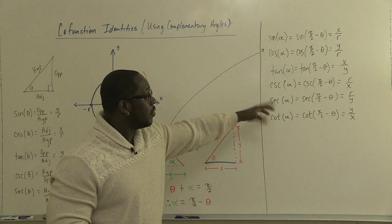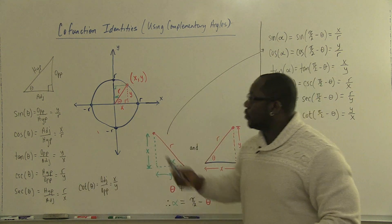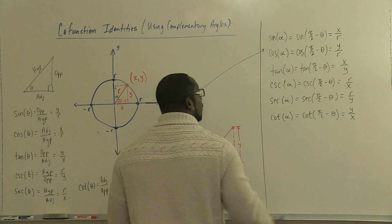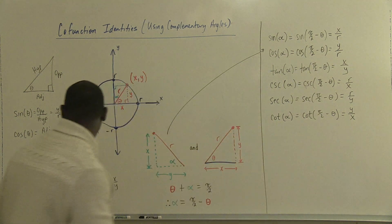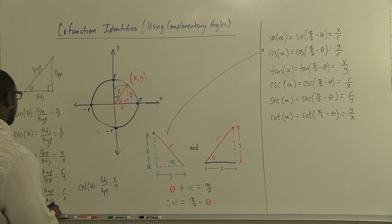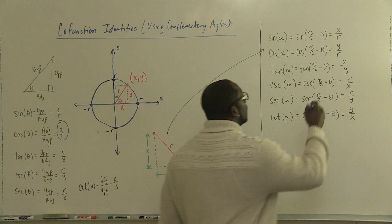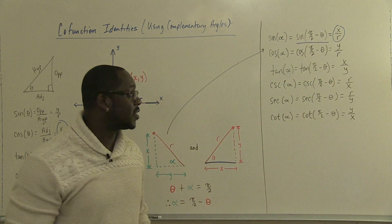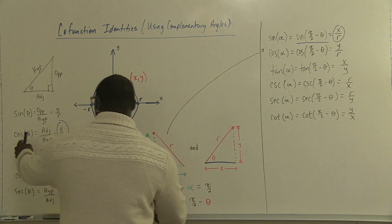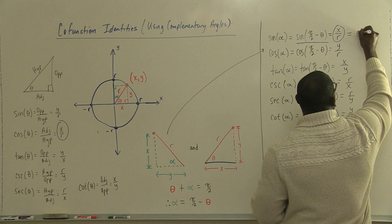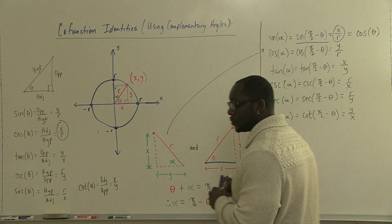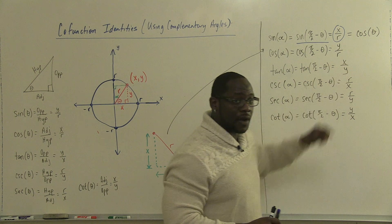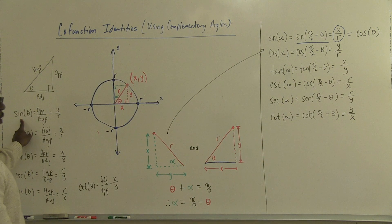Now that we have both triangles labeled out, we want to make the connections between the two. If you notice, we have x over r here and x over r here. So sine of pi over 2 minus theta is the same thing as cosine theta. Similarly, we have y over r, and y over r goes with sine — so cosine of pi over 2 minus theta equals sine theta.